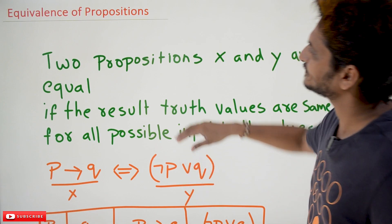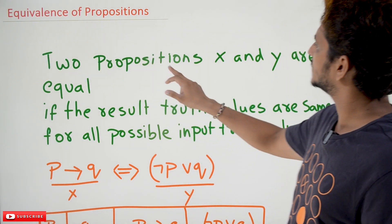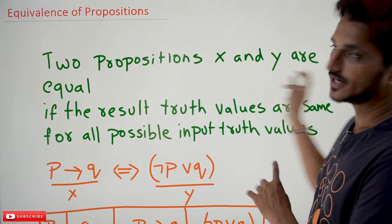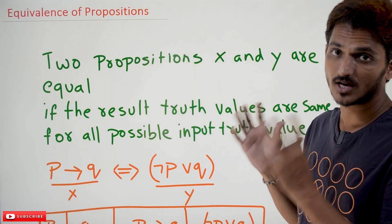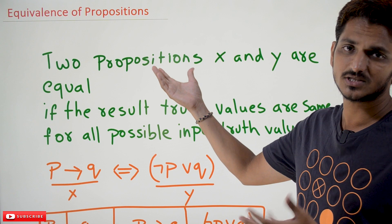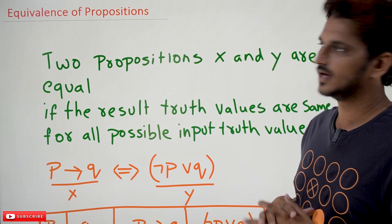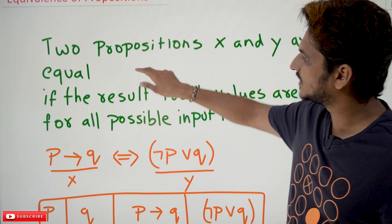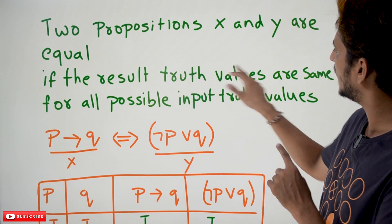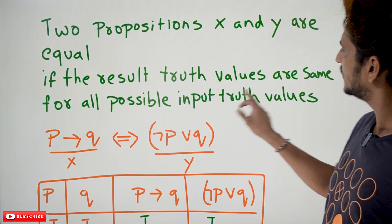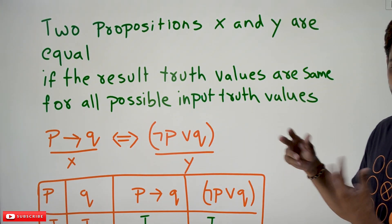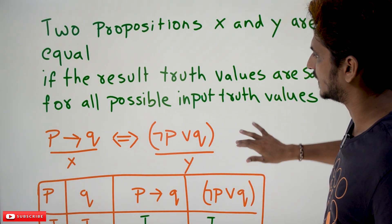Coming to today's class, two propositions X and Y are equal. When we are going to say the two propositions X and Y are equal, here propositions means compound statements are equal. If the resultant truth values are same for all possible input truth values, with example, we are going to understand it better.